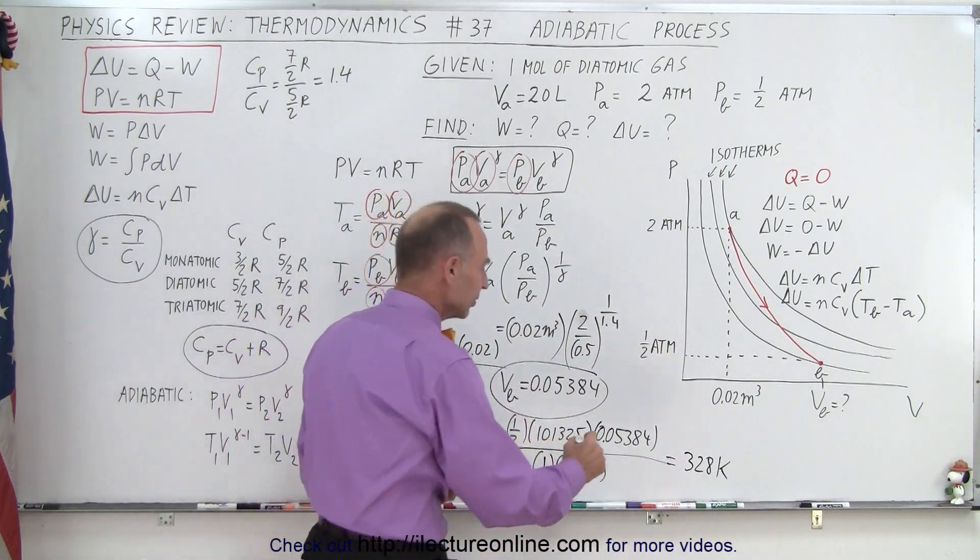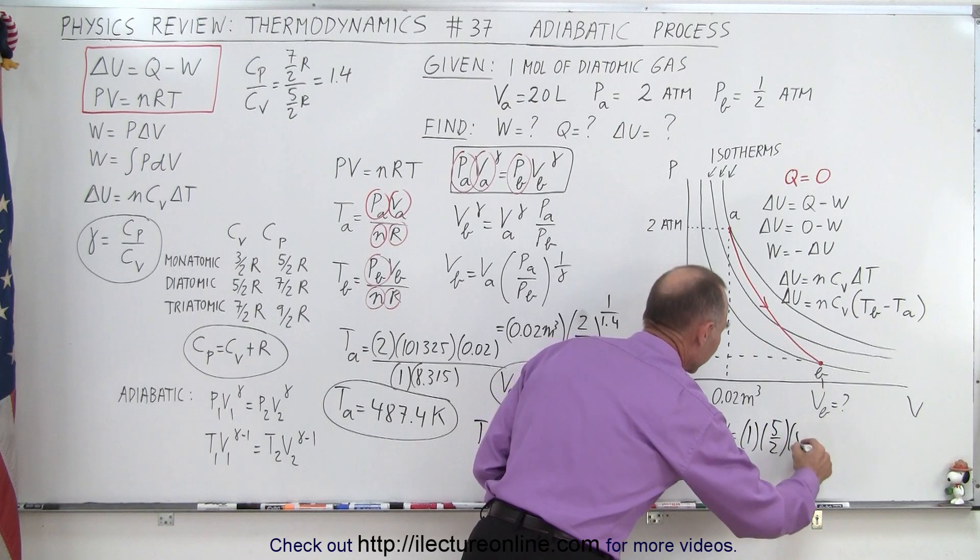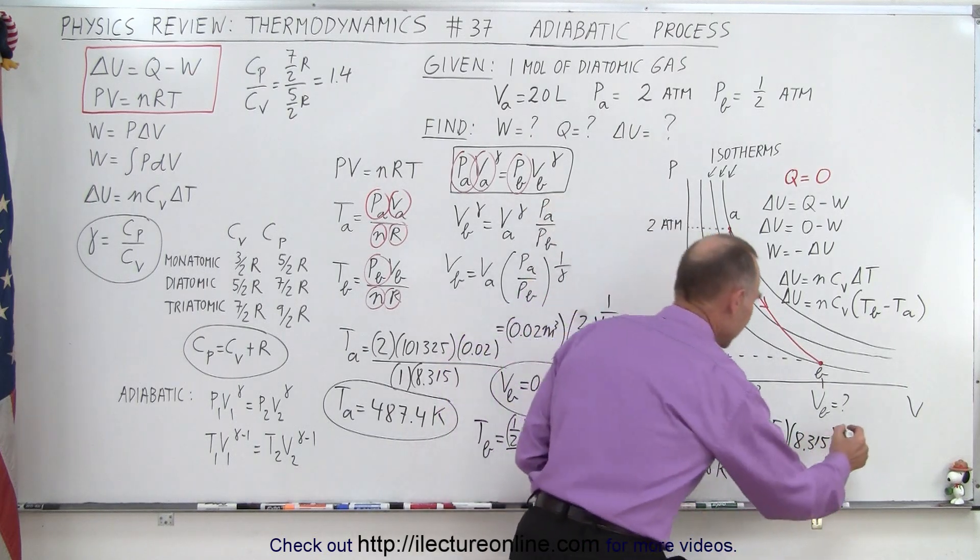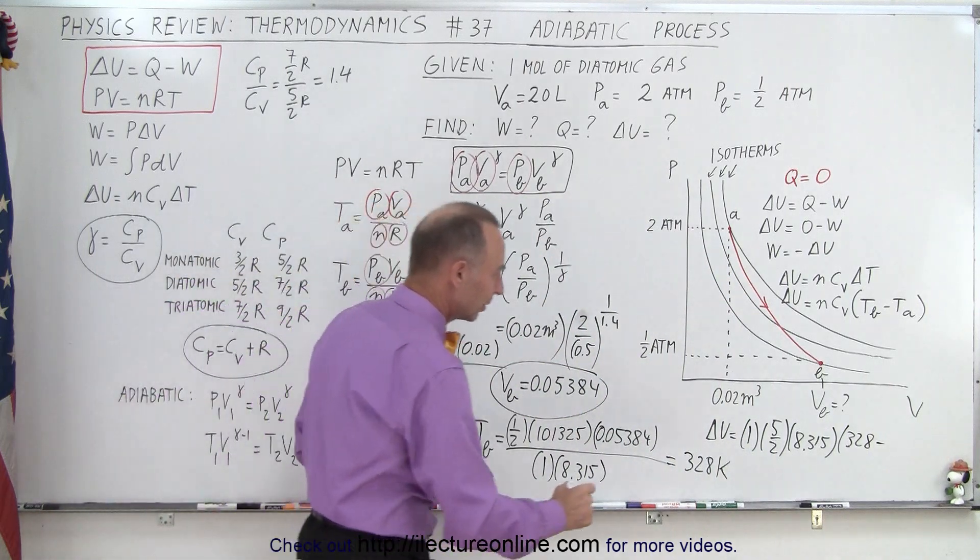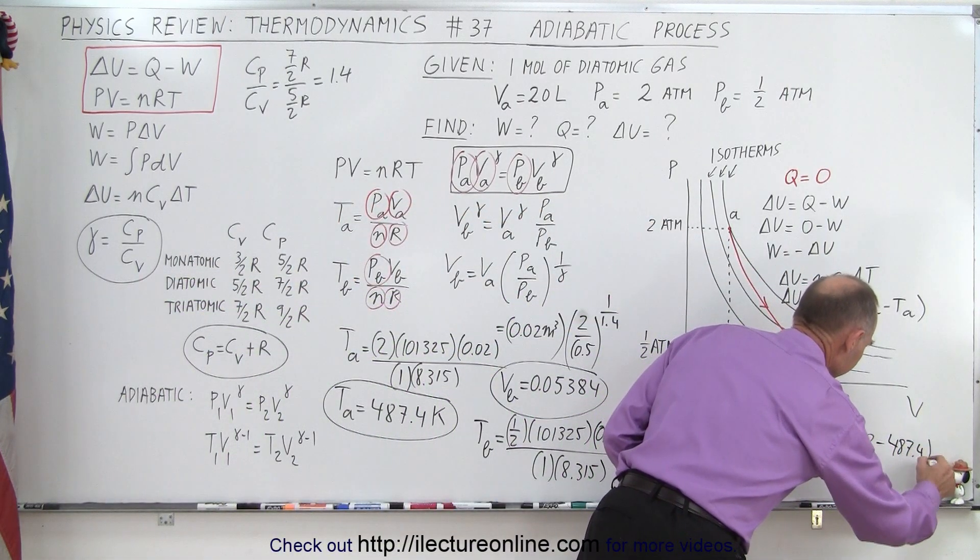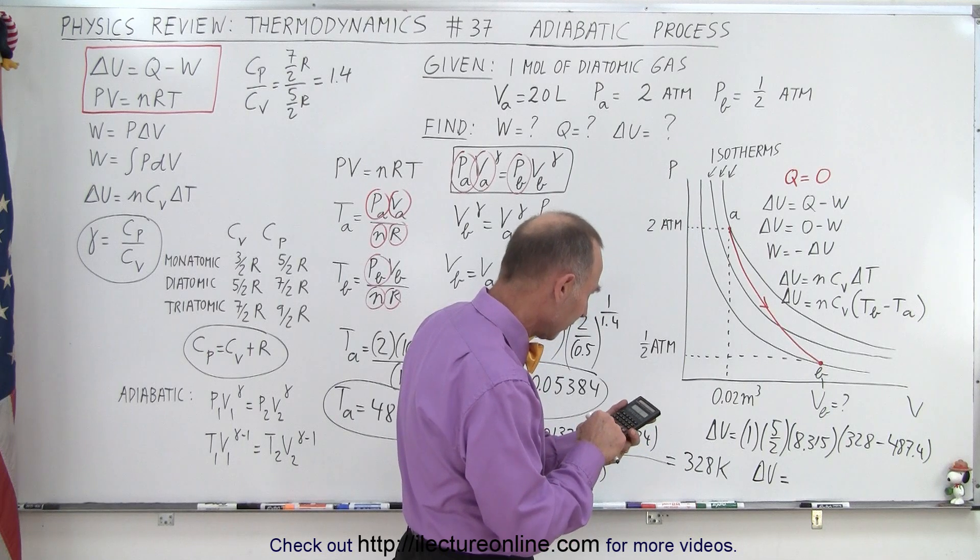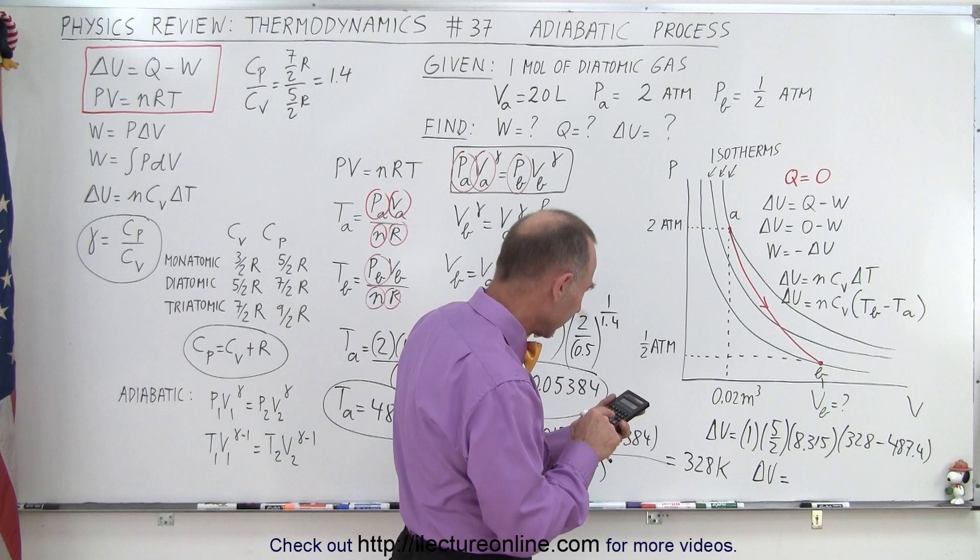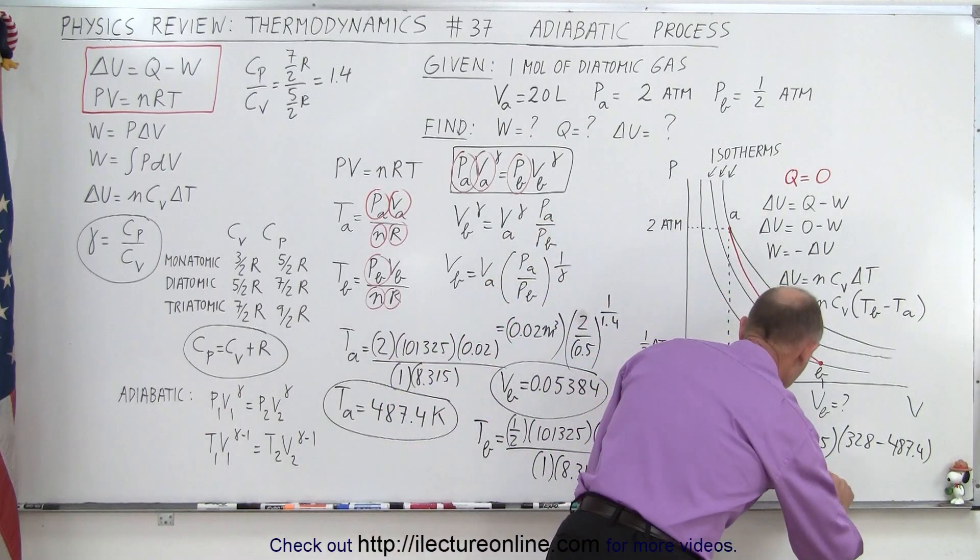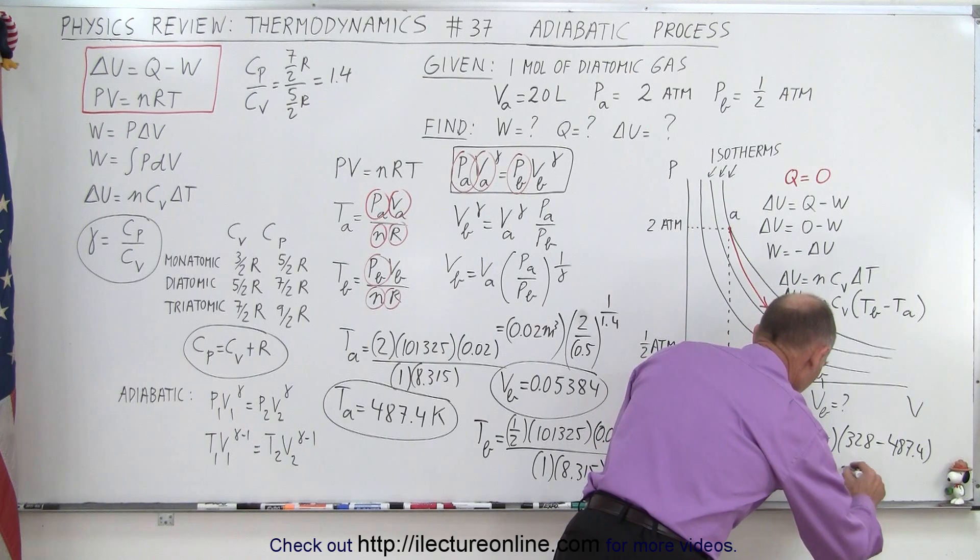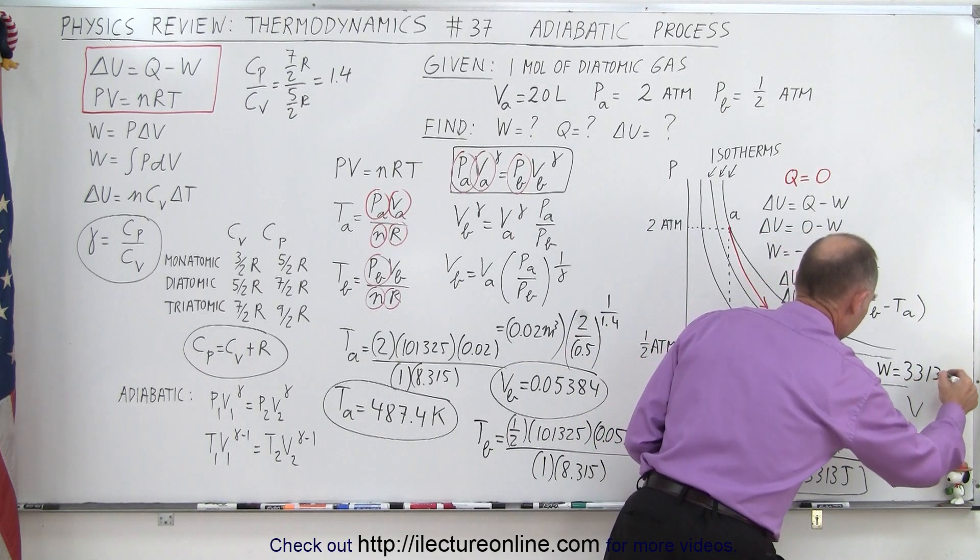And then finally, we get our delta U, which is equal to 1, times 5 over 2 times R, which is 8.315. And T at B, which is 328, minus temperature at A, which is right here, 487.4. So delta U is equal to minus 487.4 times 8.315 times 2.5, equals, and that would be minus 3,313 joules. And therefore, work is equal to 3,313 joules.